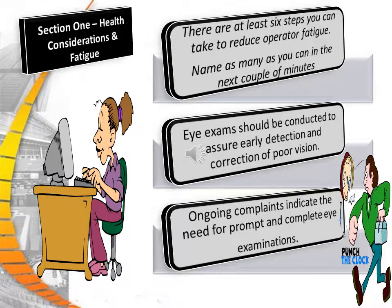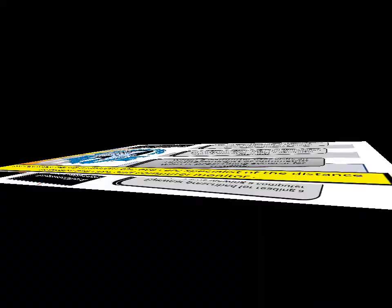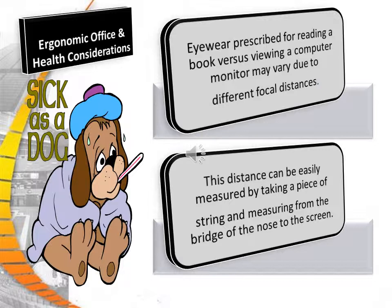There are at least six steps you can take to reduce operator fatigue on computer stations. Eye exams should be conducted to ensure early detection and correction of poor vision. Ongoing complaints indicate the need for prompt and complete eye examinations. To ensure that prescribed corrective lenses provide sufficient range of focus for computer monitor work, tell the examining optometrist that the employee's work involves using a computer monitor. The operator needs to inform the eye care specialist of the distance between the eyes and the computer monitor, which can be measured by taking a piece of string from the bridge of the nose to the screen.